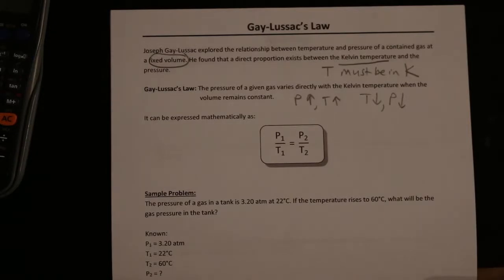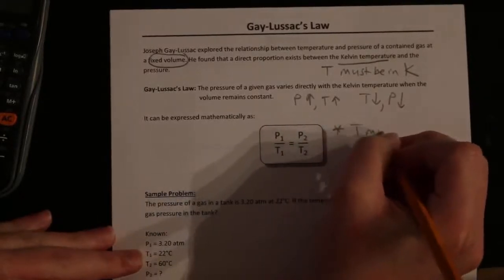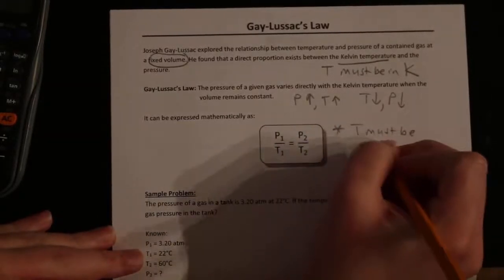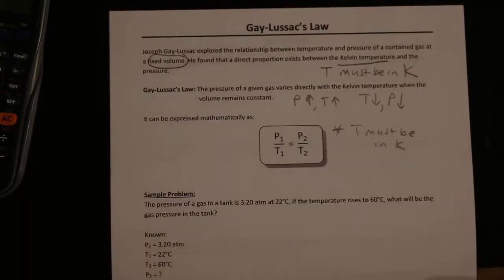Just like with Charles' law, where volume and temperature were directly proportional, so are pressure and temperature in Gay-Lussac's law. They follow each other. If pressure goes up, so does temperature. If pressure goes down, so does temperature. They're always going to do the same thing. Mathematically, we express that as P1 divided by T1 equals P2 divided by T2. Again, we have to remember T must be in Kelvin.